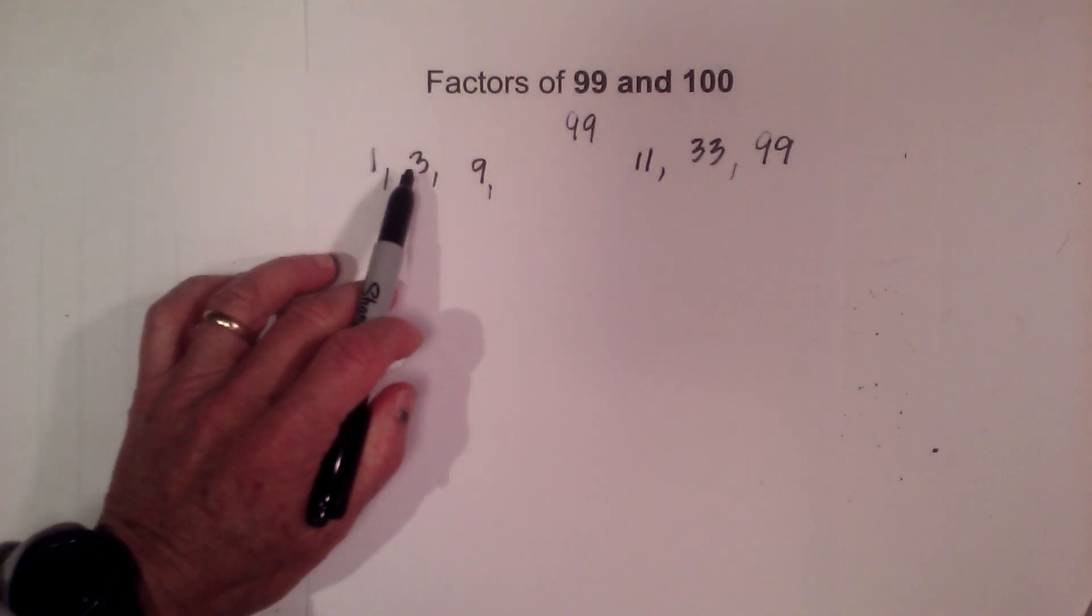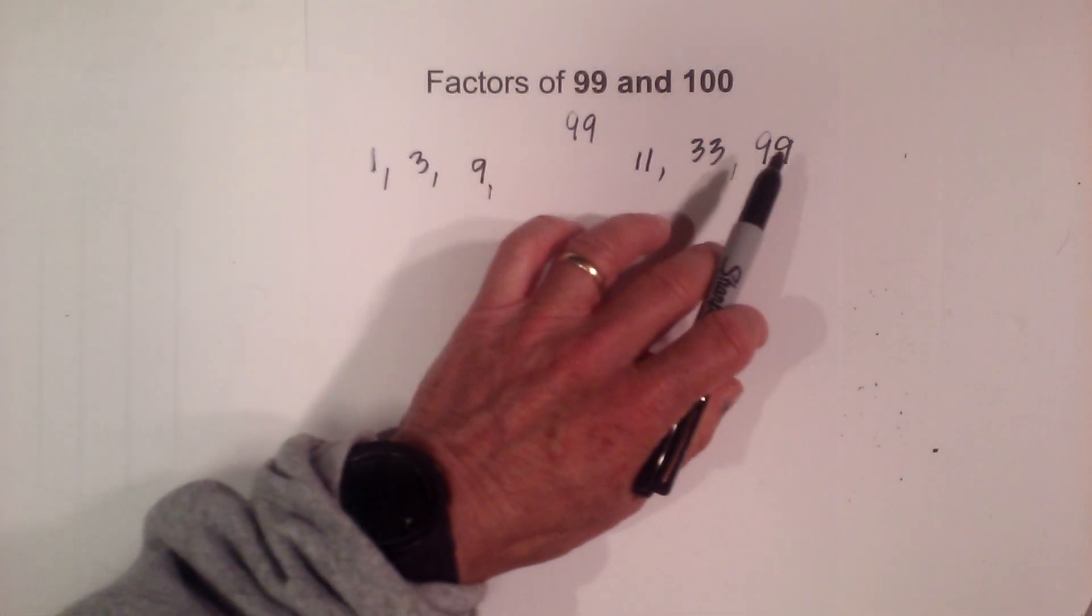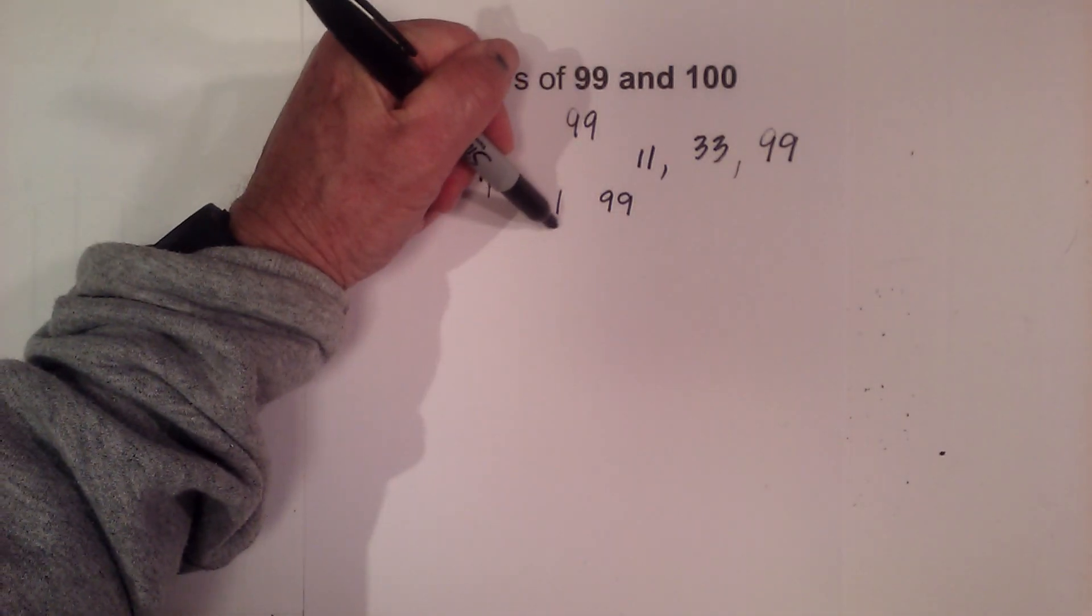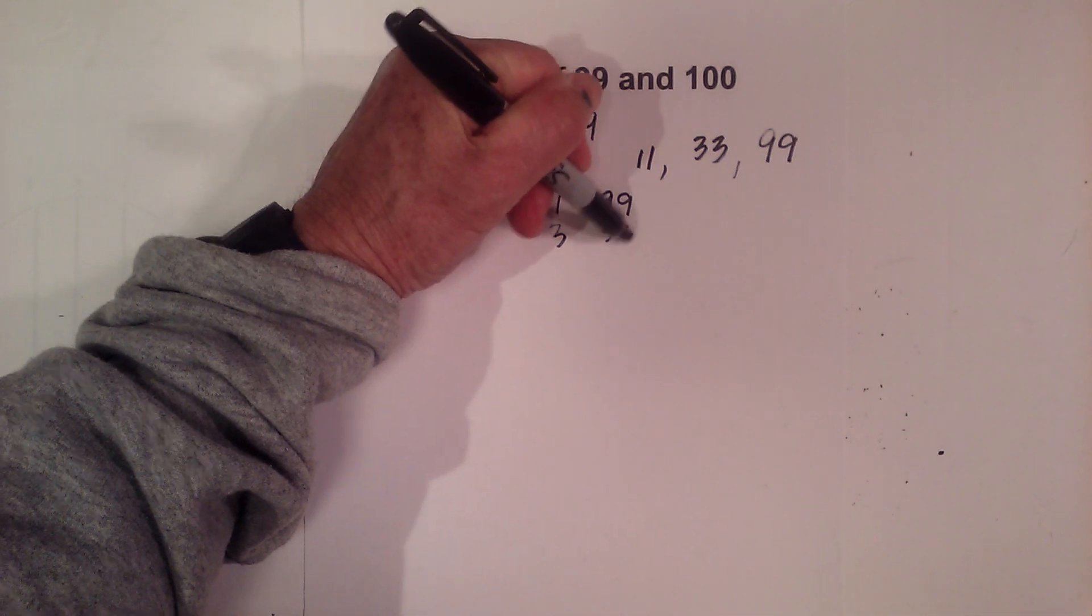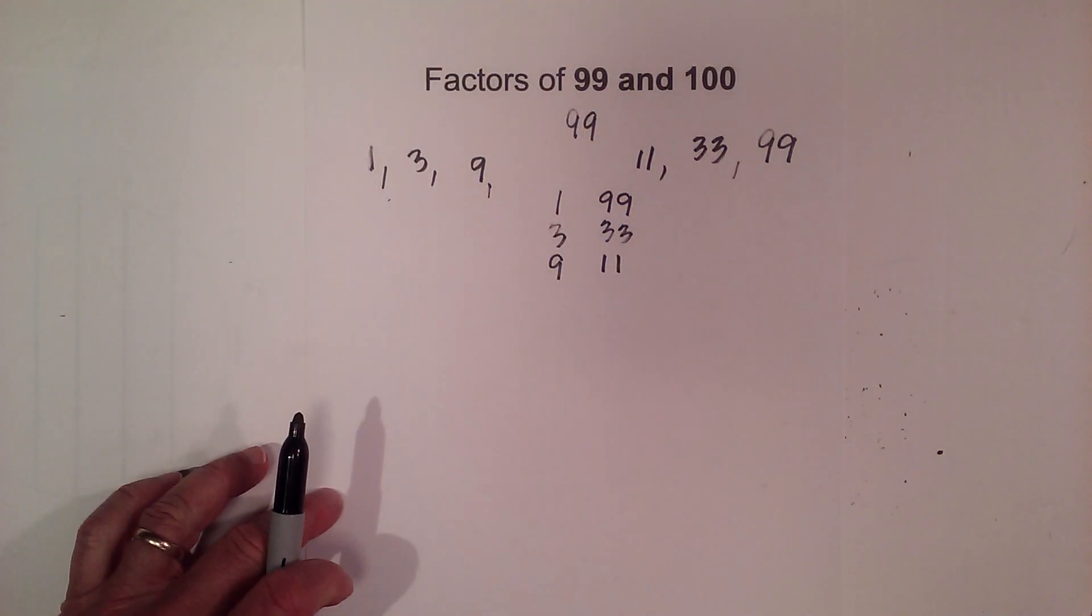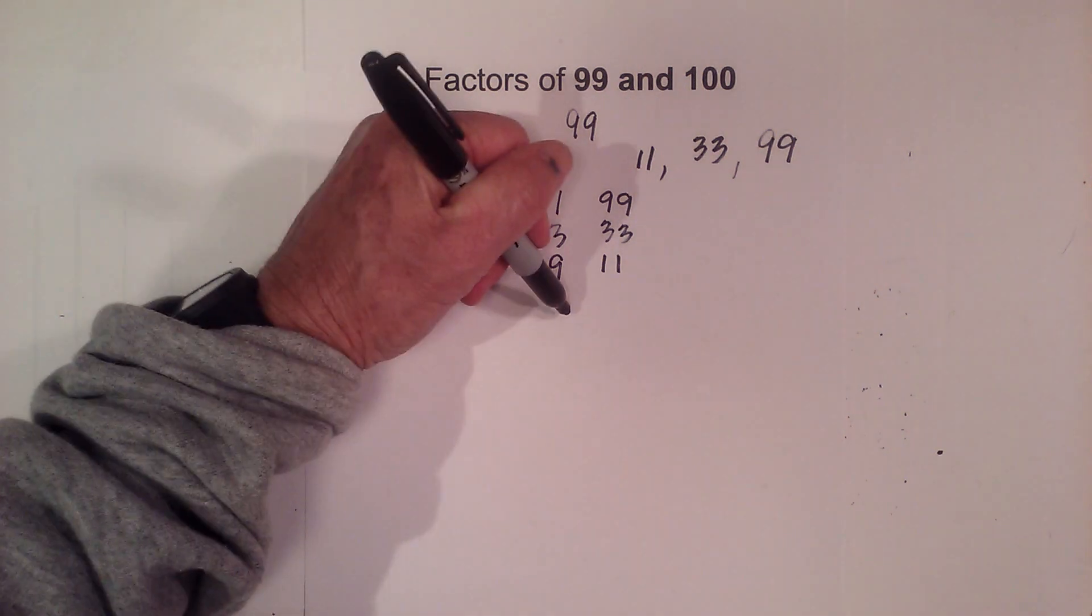So the factors are 1, 3, 9, 11, 33, 99. If you'd like to see them in pairs it's 1 times 99, 3 times 33, 9 times 11. If you'd like to know the prime numbers I can create a factor tree.